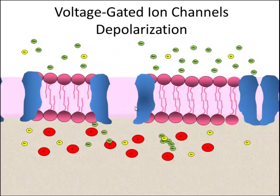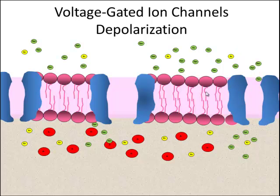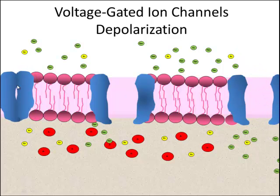Sodium comes rushing in and affects another ion channel further down the axon. This opens up. Sodium comes rushing in, and meanwhile, ion channels begin to close behind it. Now we have a directional message.